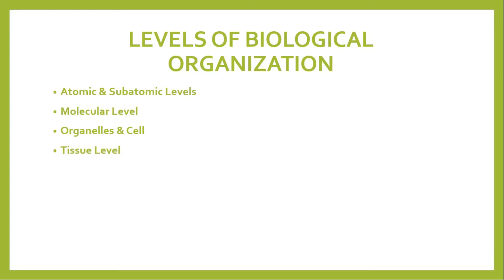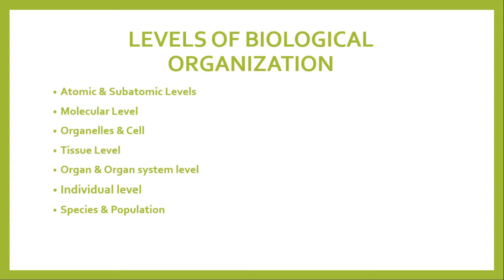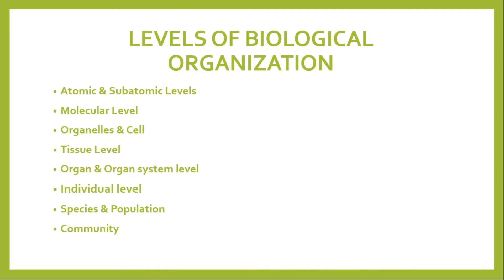Then cells combine to form tissue, tissues form organs, and organs form organ systems, which ultimately form the organism — also called the individual level. Then if you get the same individuals together, they form a species, and the same species in a specific time and place form a population. Many populations interact with their abiotic factors to form a community, and above community is the biosphere, though that is not in your current syllabus.